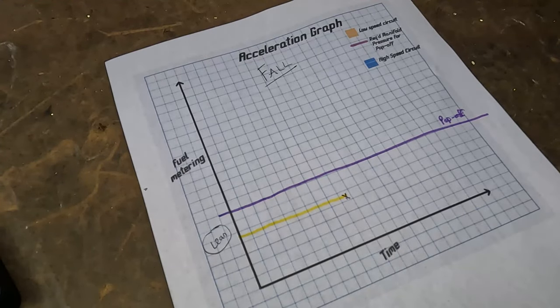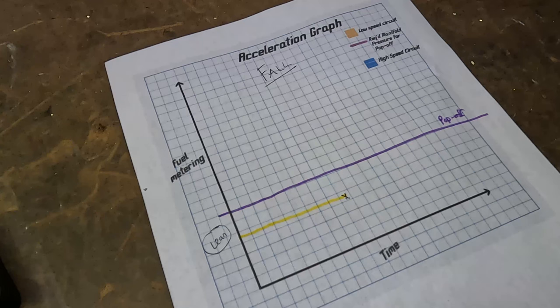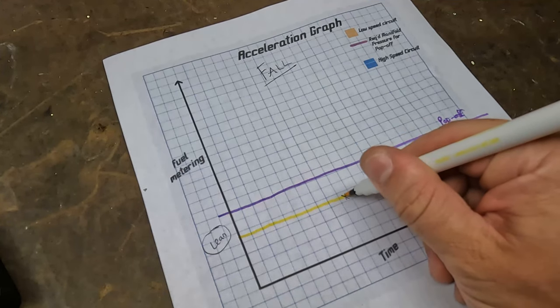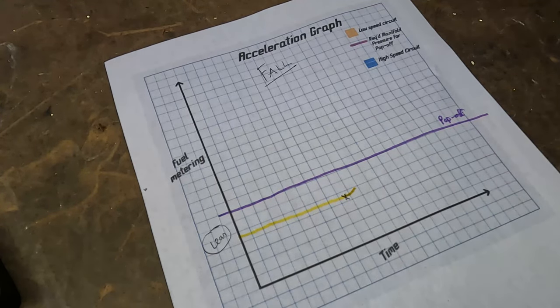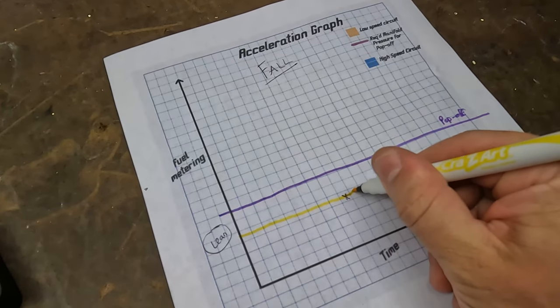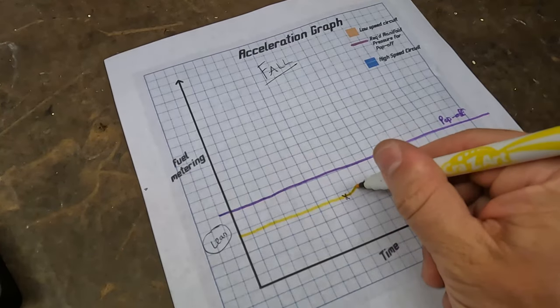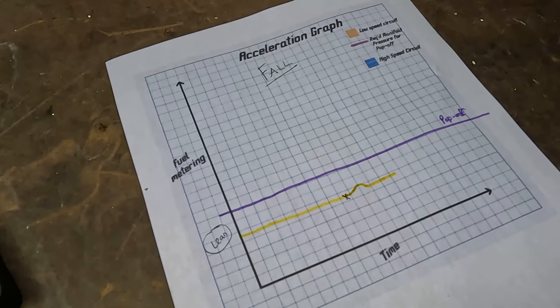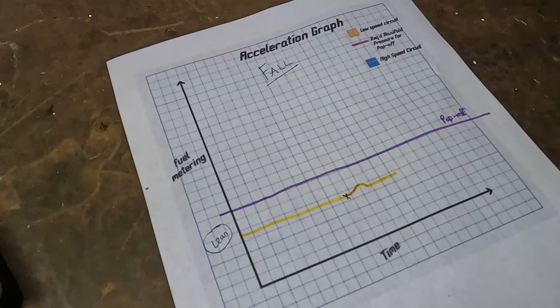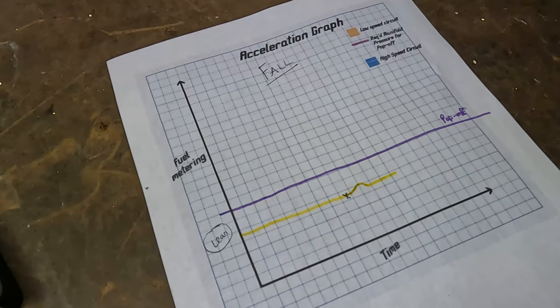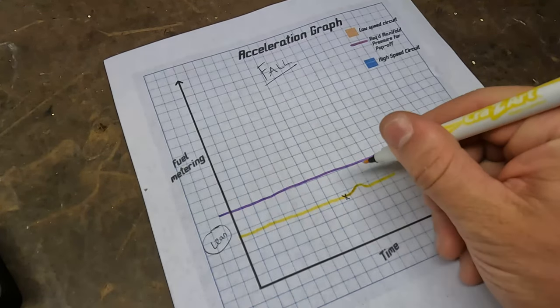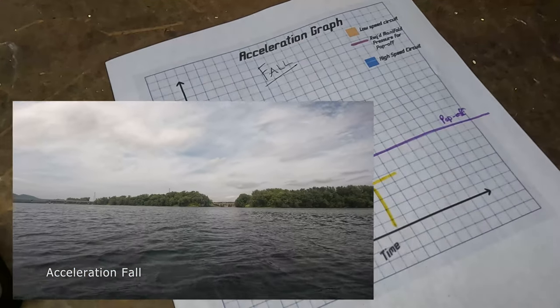Likewise, when we have an acceleration fall, it's still a lean condition but it's a little more drastic than a hesitation. In this situation with a fall, because we're so lean, we're gonna try to accelerate up, but because of our mixture having way more air than fuel, we're not going to be able to have combustion. So our RPMs will fall right back down to idle. People commonly mistake acceleration falls as bogging. Sometimes if you accelerate fast enough, you generate so much air in a short amount of time that you will stall and shut off the ski.